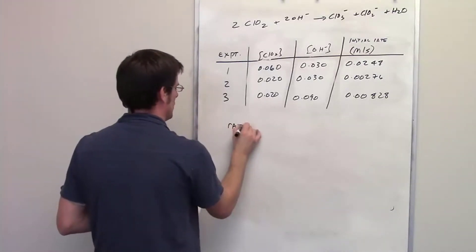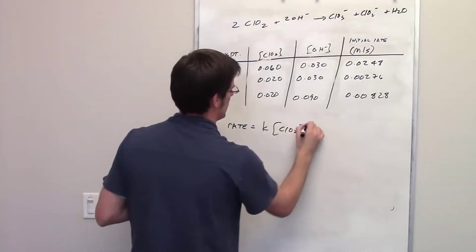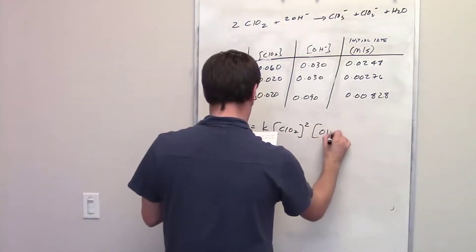From the earlier question, we determined, or should have determined, that the rate of this reaction is equal, of course, to k times the concentration of chlorine dioxide squared, multiplied by the concentration of hydroxide to the first power.